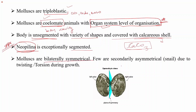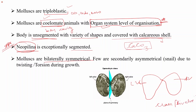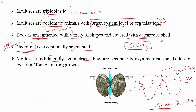Mollusks are bilaterally symmetrical. For example, this figure of a clam shows the right and left valves. The body can be divided into two equal halves through a single axis of symmetry — this is the plane of symmetry. If we try to divide the organism through any other axis, it will not be symmetrical, so only one axis of symmetry is present.